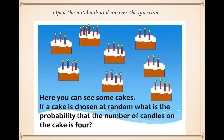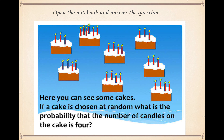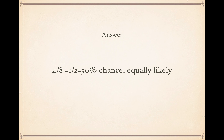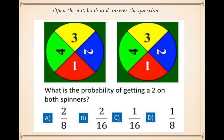Please pause if you haven't figured it out yet and need more time. The answer is four over eight, or a half chance — an equally likely chance of getting the cake with four candles or not. As you can see, four cakes have four candles and the other cakes have either three candles or six. The chance is 50 percent — equally likely. Right in the middle.